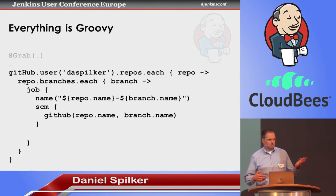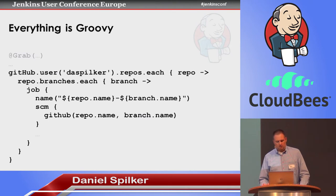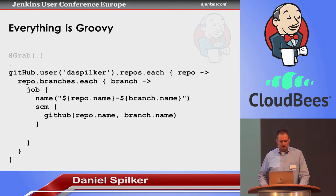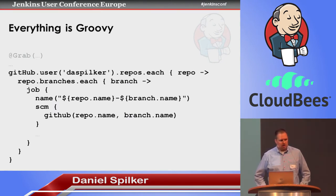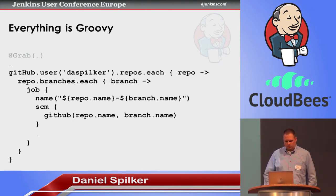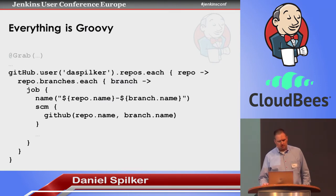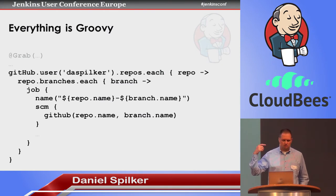Furthermore, the DSL is a Groovy DSL, so the scripts are Groovy code. You can do everything you can do in Groovy — use loops and branches. You can even use the Groovy @Grab annotation to grab dependencies. In this case, I'm grabbing a GitHub API library and iterating over my GitHub account. For each repo and each branch, I create a new job named after the repo dash branch name. So I can automatically create new jobs just by pushing new branches or creating new projects on GitHub. When you set the seed job to run every 15 minutes, it checks GitHub every 15 minutes and creates new jobs on the fly.